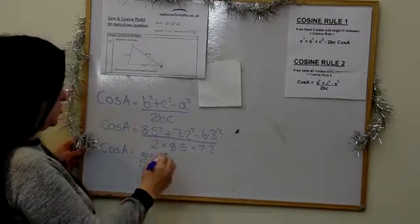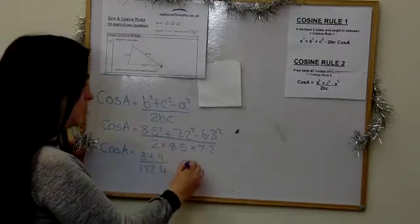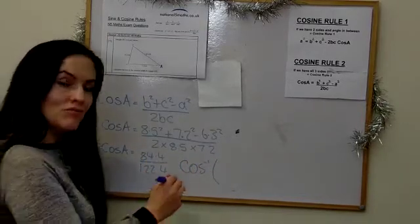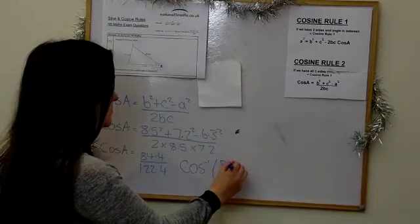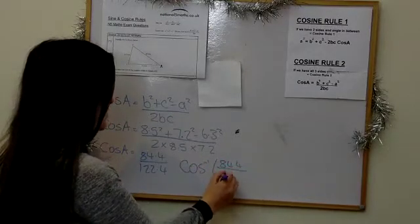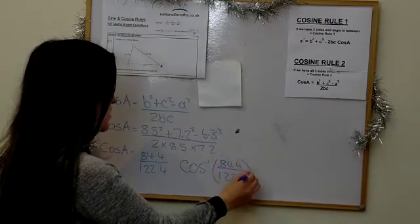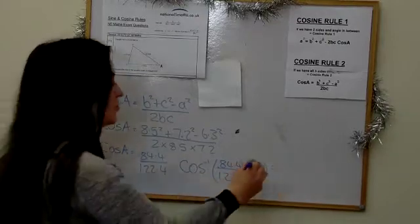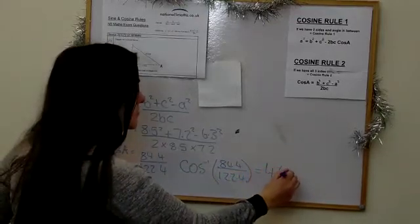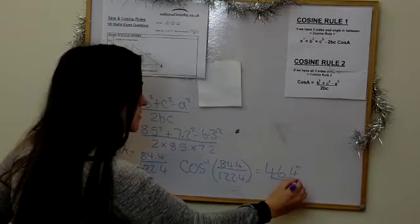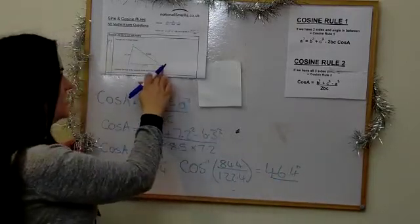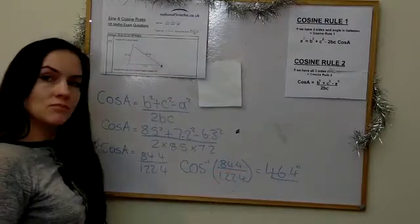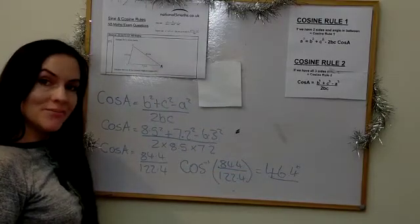To get the actual angle, we take cos⁻¹(84.4 / 122.4) and get 46.4 degrees. So the smallest angle in triangle XYZ is 46.4 degrees.